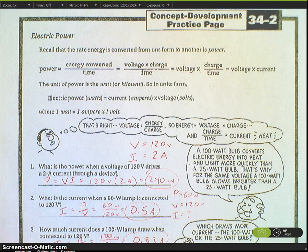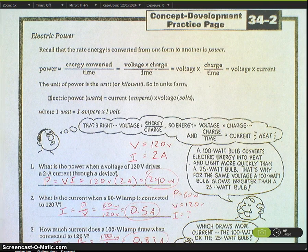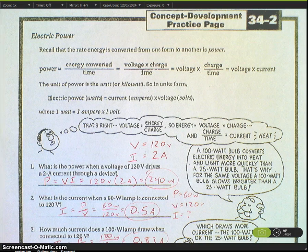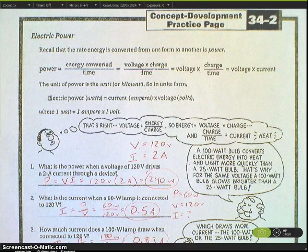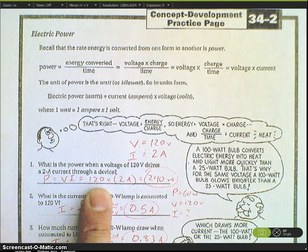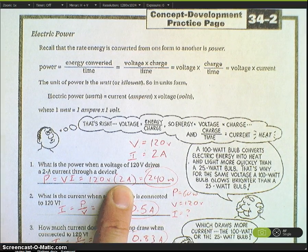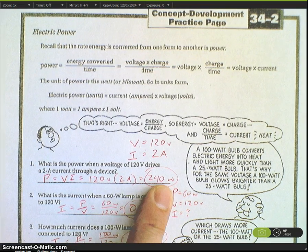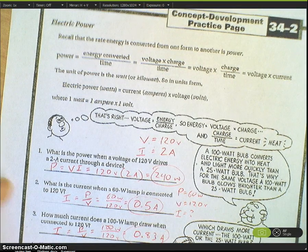Number one: the power when a voltage of 120 volts drives 2 amps through a device. Power is equal to V times I. Our voltage is 120 volts, current 2 amps, giving us a power of 240 watts.